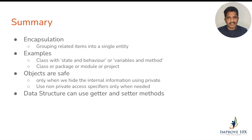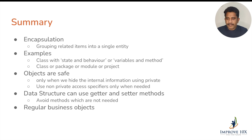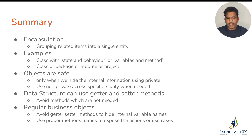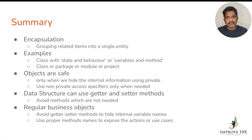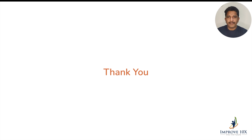Data structures can use getter and setter methods, but if you don't want to allow certain methods to be called, just remove them — do not generate getters and setters for all variables. For regular business objects, avoid getter and setter methods so that we can hide internal variable names. Instead, use proper method names to expose the actions or use cases — we don't need to expose variable names, we need to expose the behavior. This is all about encapsulation. I hope everyone understood, and how you can use encapsulation at project, package, or class level to make your project more scalable and secure.